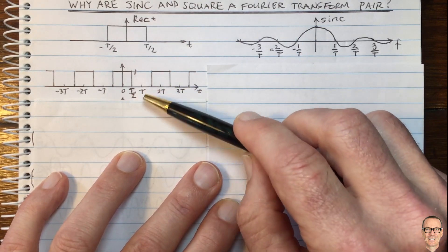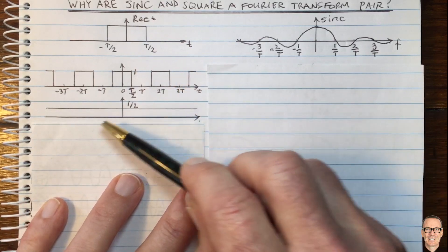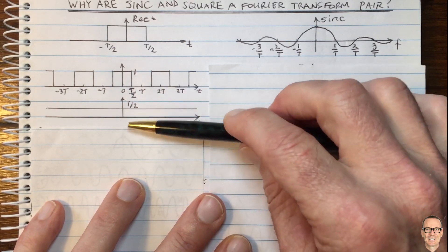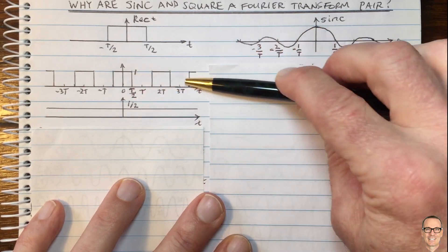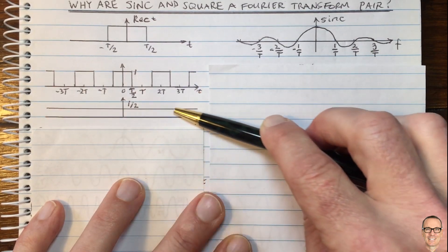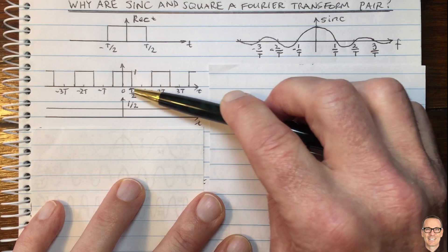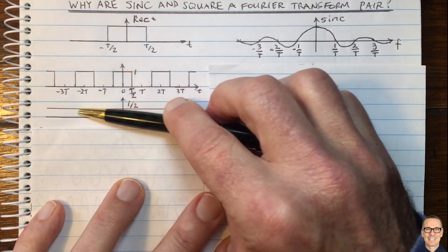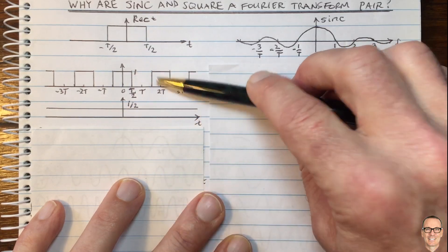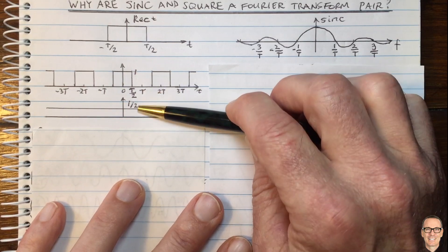Let's look at the zero frequency sinusoid — that's one that doesn't vary, a constant with time. That's going to be a component of this function. If you had to generate this, you would first start with a function of one-half, because half the time this equals one and half the time zero. So a flat function at value one-half is going to be a fair component in generating this signal. That's the zero frequency.